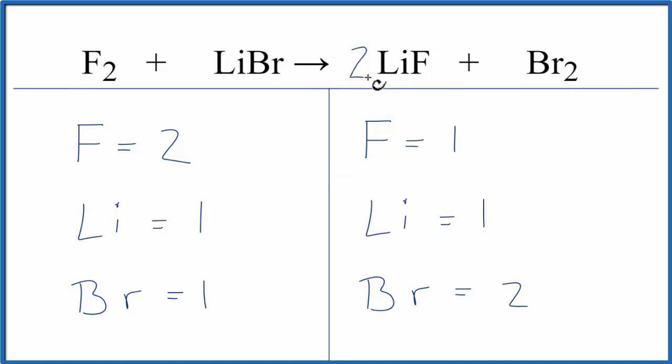Let's put a 2 in front of the LiF. This 2 applies to everything, so we have 1 times 2, that'll give us two Li's, but with the F, 1F times the 2, that gives us two F's.